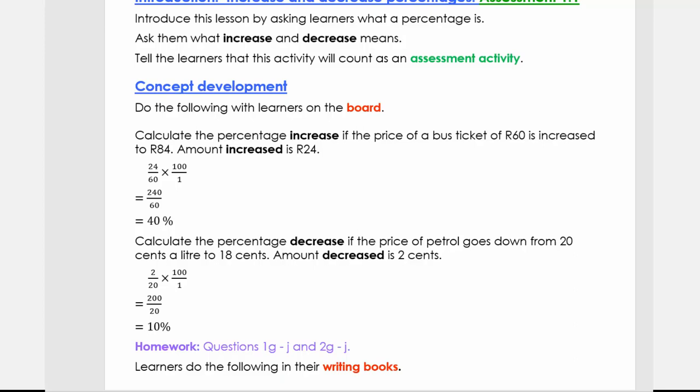First we need to know the amount increased: 84 minus 60 gives us 24 rand more. To find the percentage, we write 24 over the original price of 60, multiplied by 100. We change 100 into a fraction — 100 over 1 — then multiply: 24 times 100 on top, and 60 times 1 on the bottom, giving 2400 over 60. Since 6 goes into 24 four times, with the zero remaining, that's 40. So there is a 40% increase.